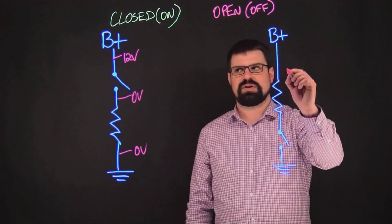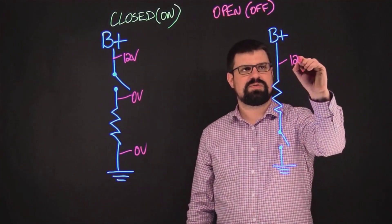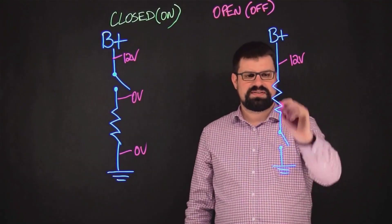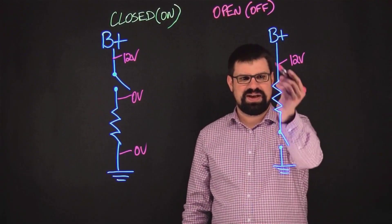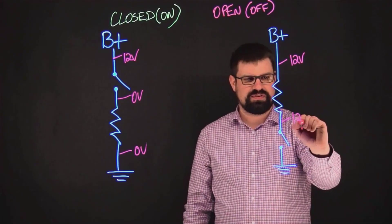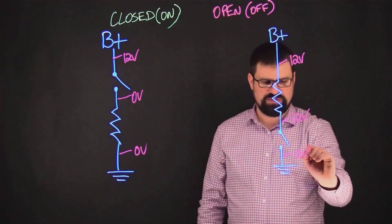On our switch ground circuit, we're going to have 12 volts here, but also after the load, we're going to have that resistive path to power and no current flowing, so we're still going to see 12 volts, and then zero volts on the ground side.